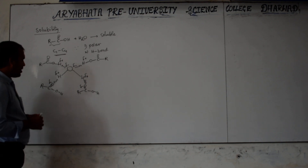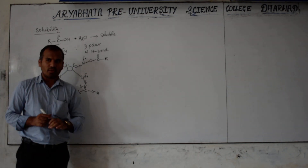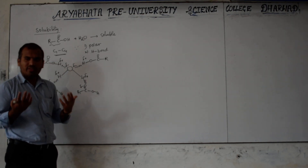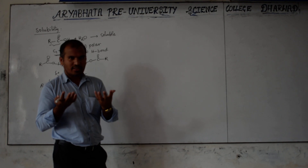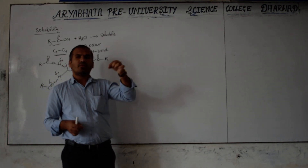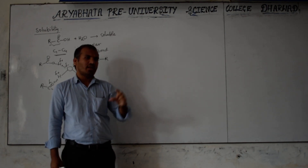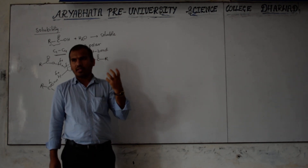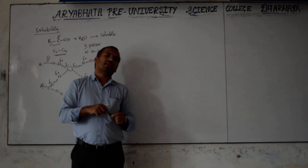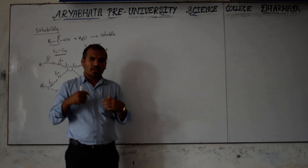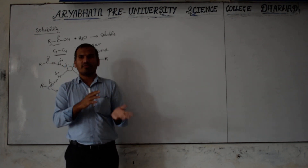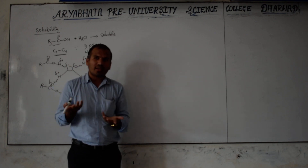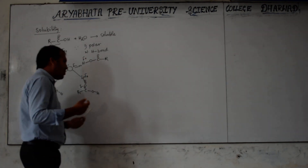So we have covered three physical properties: physical state, boiling point, and solubility. Physical properties are those we can observe with our eyes — whether a compound is liquid, gas, or solid, or whether it dissolves in water. Chemical properties cannot be seen directly. When you add something to a substance, what changes after the reaction is a chemical property. Now we will discuss the chemical properties.